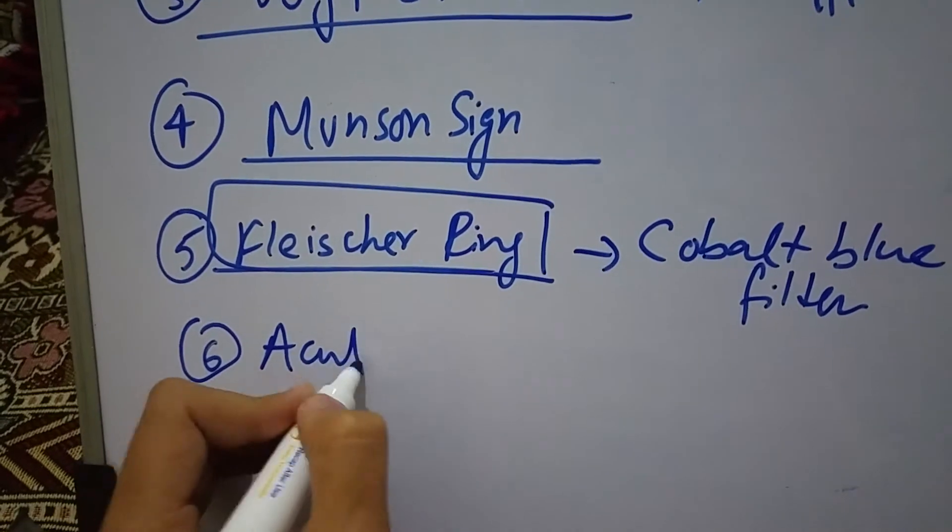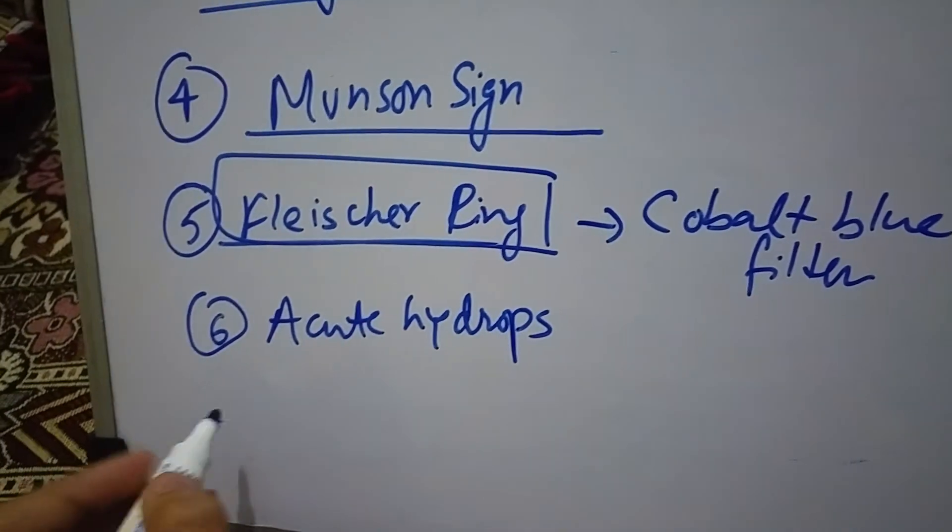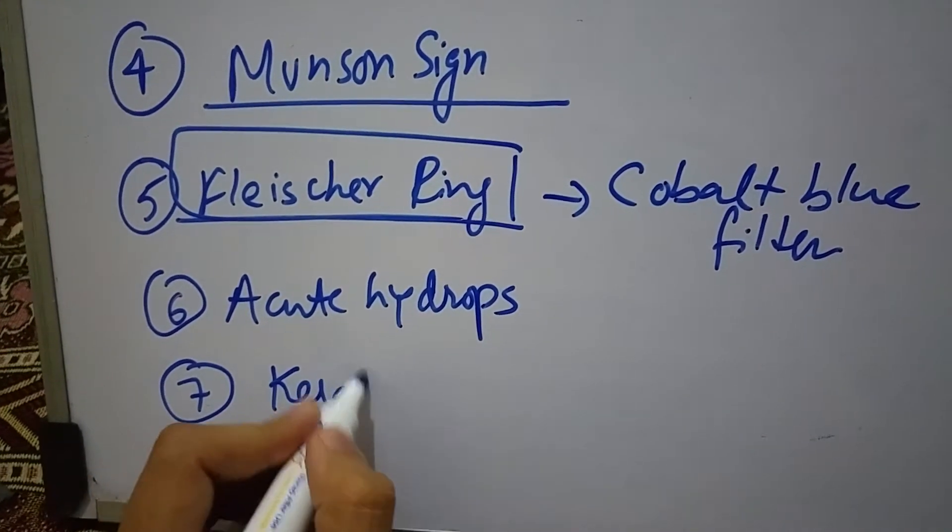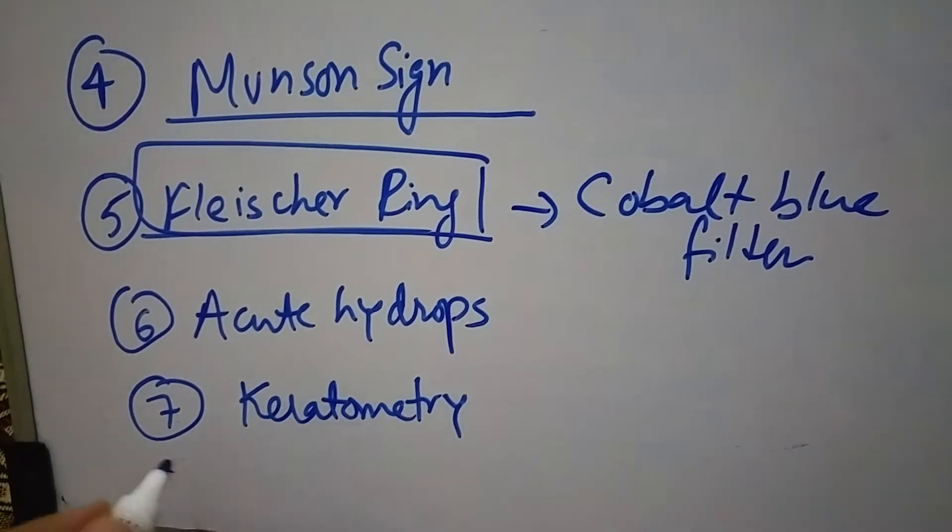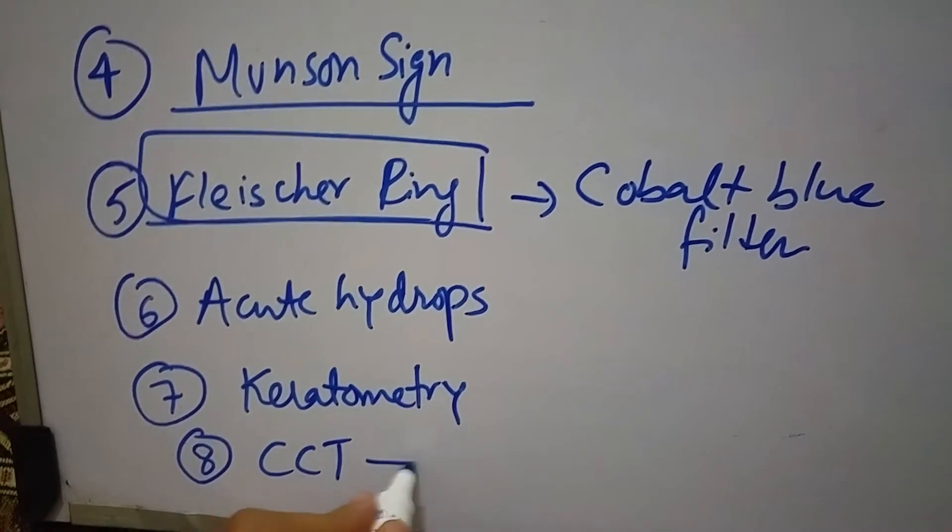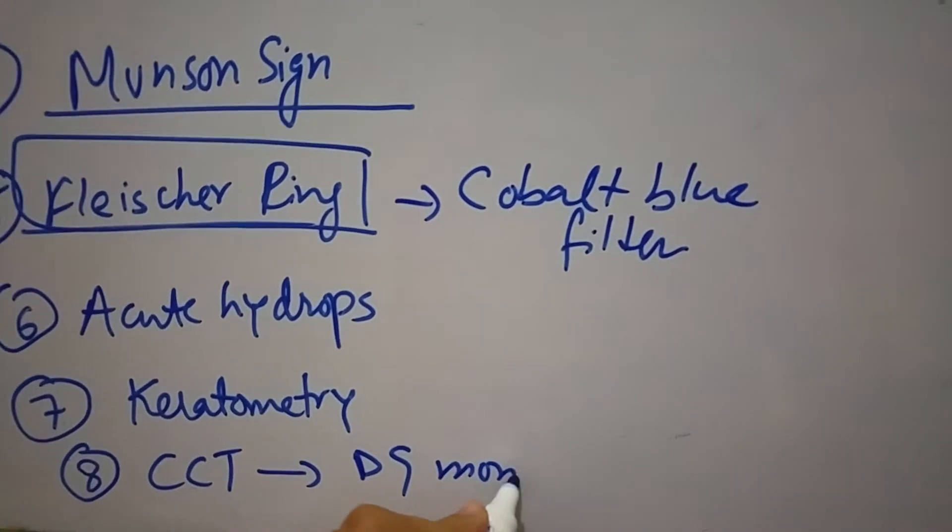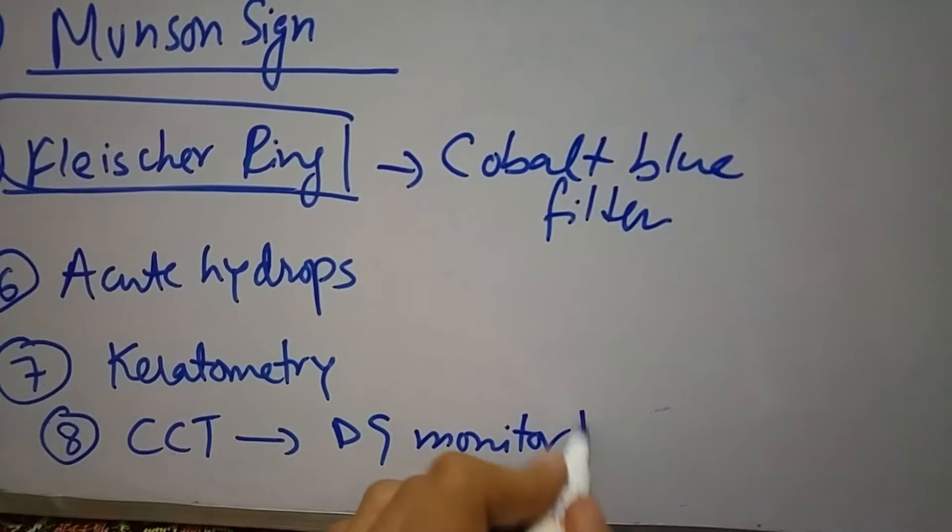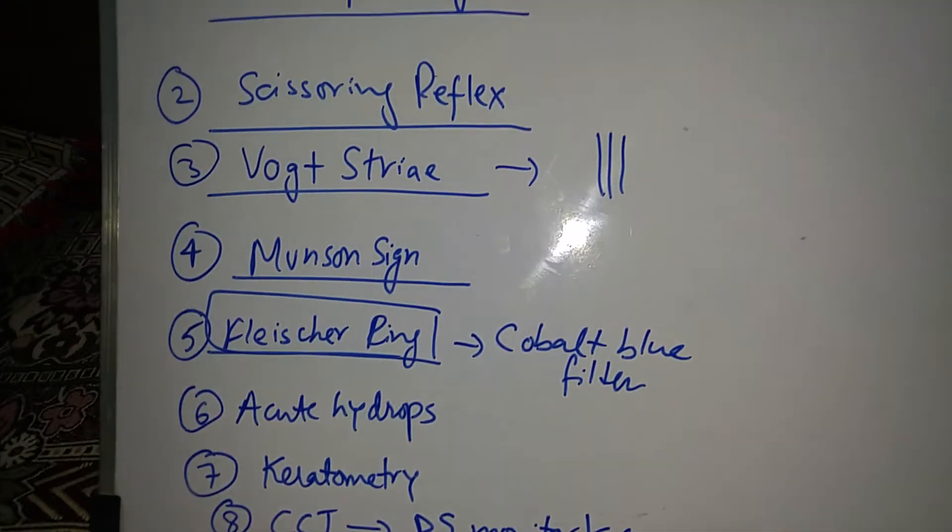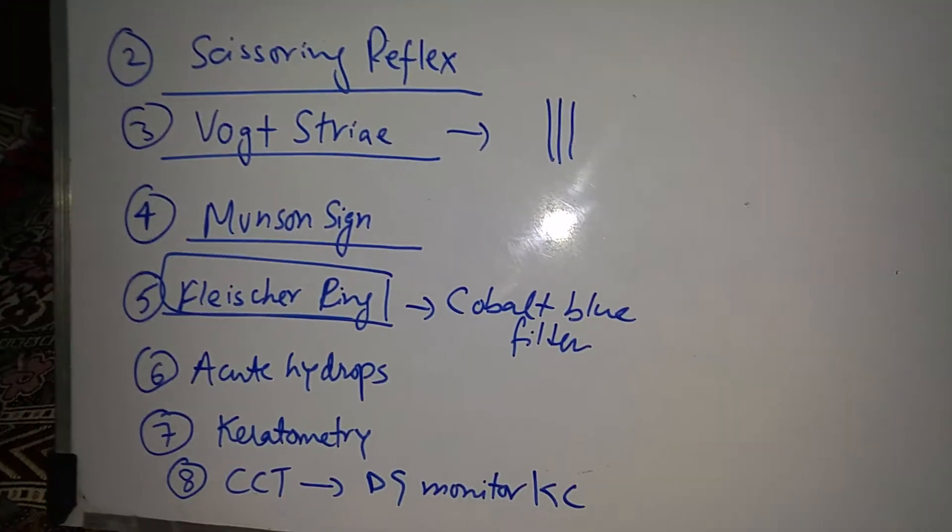Acute hydrops, as I have explained before. Keratometry shows steep cornea. And nowadays computerized corneal topography is used to diagnose and monitor keratoconus. So these are all the signs of keratoconus that help you in diagnosing keratoconus.